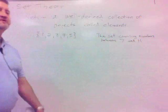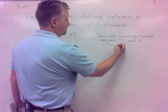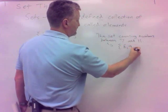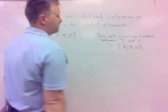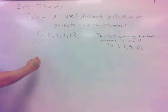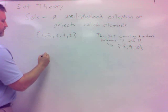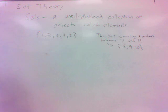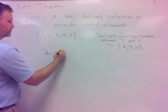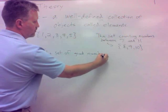For example, if I said the set of counting numbers between 7 and 11. Well, as long as you know what a counting number is, you can reproduce that set, and your set would be the same as my set. That would be {8, 9, 10}. The counting numbers between 7 and 11. That's what we mean by well-defined.